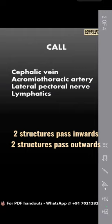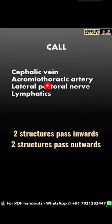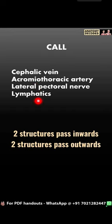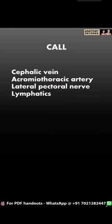Now let's learn about the structures piercing the clavipectoral fascia. It can be remembered by the mnemonic C-A-L-L, where C stands for cephalic vein, A for acromiothoracic artery, L for lateral pectoral nerve, and L for lymphatics. Out of these, the cephalic vein and lymphatics pass inwards, while the middle two structures — acromiothoracic artery and lateral pectoral nerve — pass outwards.